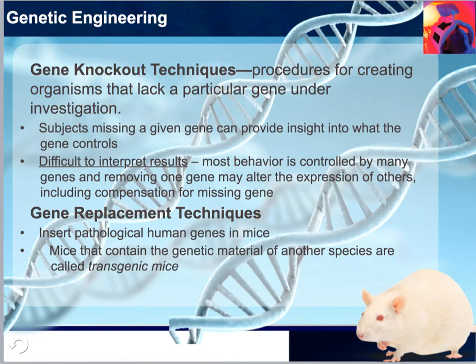Mice that are the products of gene knockout techniques are referred to as knockout mice. In another gene replacement technique, a gene is replaced with one that is identical except for the addition of a few bases that can act as a switch. This would allow us to turn the gene on or off in response to particular chemicals or light, so the gene can be activated or suppressed at a particular point in development.